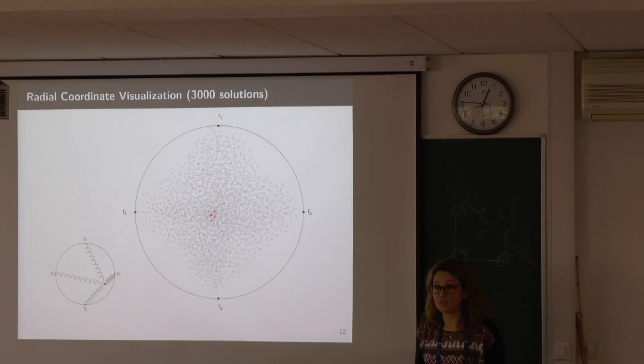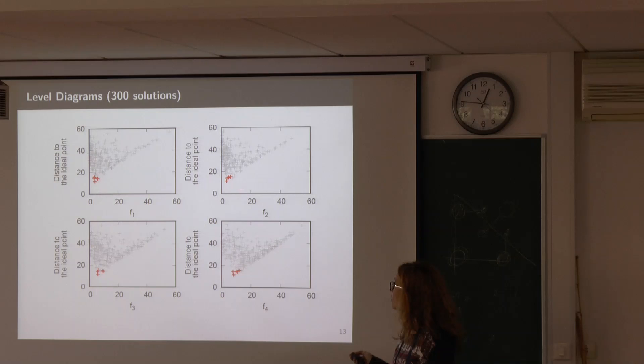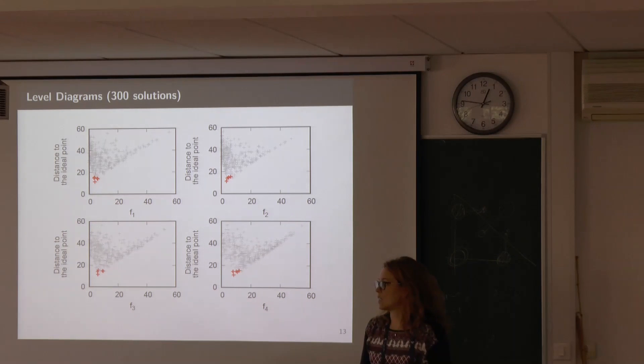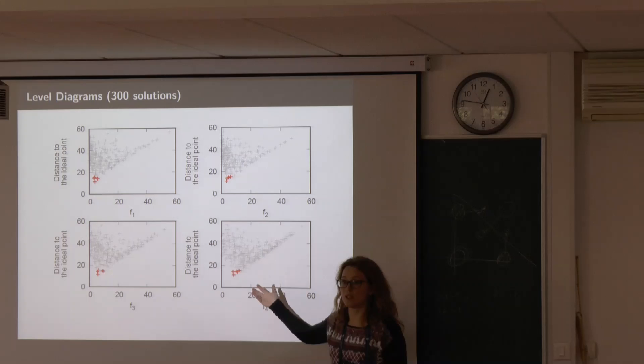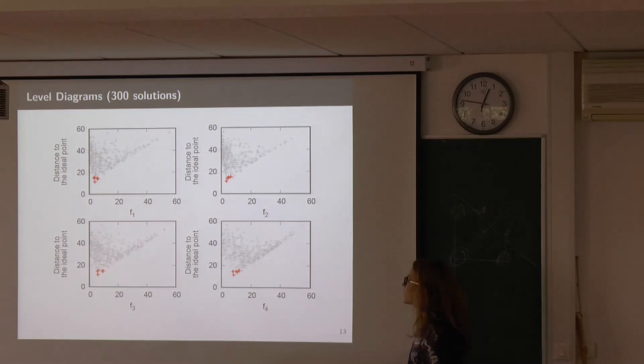We do have some more specific visualization methods used in multi-objective optimization that can show the knee. One of them is called level diagrams, and it's basically a set of M diagrams for M-objective problems. For a four-objective problem, you have four diagrams. Each solution here is plotted against its value in this one objective and the distance to the ideal point. The ideal point is basically the origin of the coordinate system in what we are looking for. It's the point that would really dominate everything else. Here, you do see these knees. You're able to see that there is a spike there, and that is a knee. So this is a successful method for this purpose.